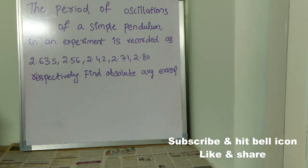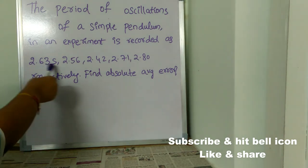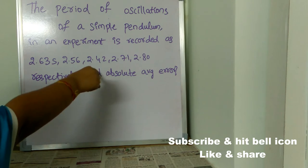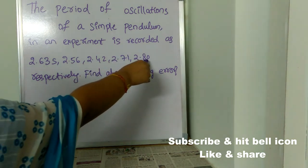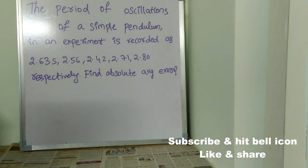Coming to the question, the period of oscillations of a simple pendulum in an experiment is recorded as 2.63 seconds, 2.56 seconds, 2.42 seconds, 2.71 seconds and 2.80 seconds respectively.